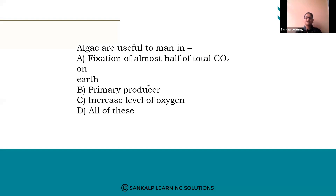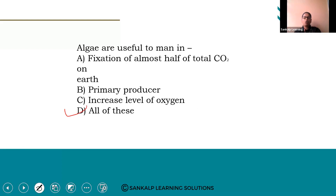Algae fix almost half of the total carbon dioxide on earth. Algae are primary producers because in water or aquatic medium, the producer at the starting trophic level of the food chain is algae. Algae also increase the level of oxygen due to photosynthesis. So option D — all of these — is the right answer.